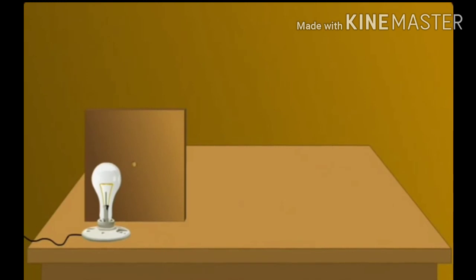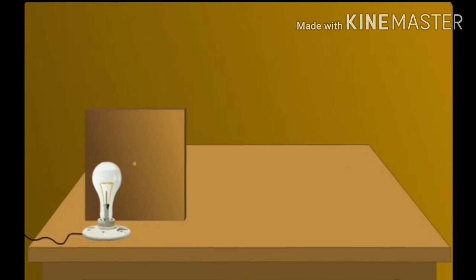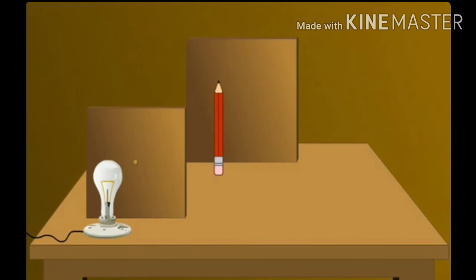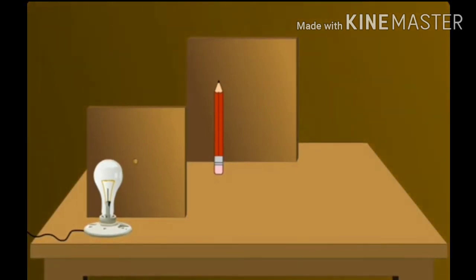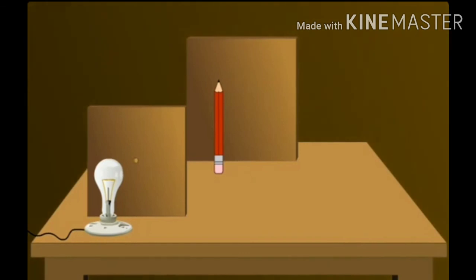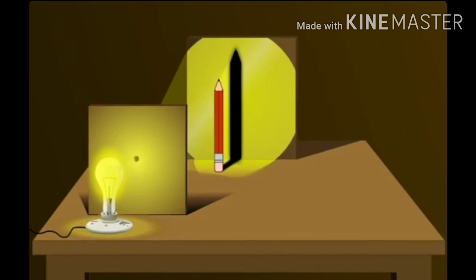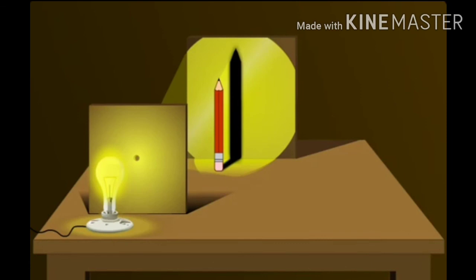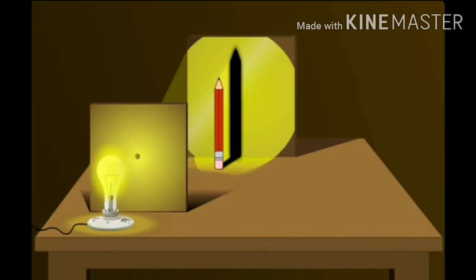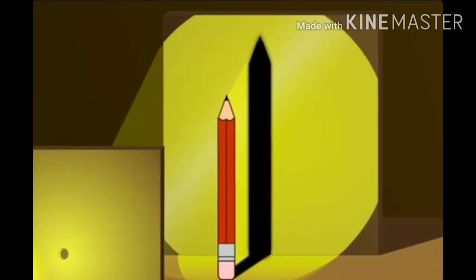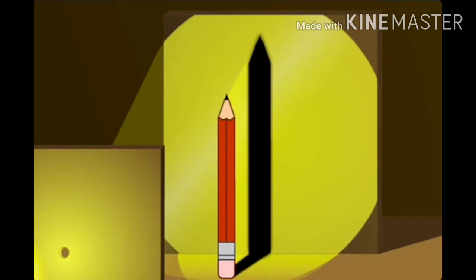Look at this setup. There is a bulb, a cardboard with a small hole, a pencil, and a screen. Why do we have a small hole? Because the bulb is pretty big — you can't call it a point source. So we allow the light to pass through the hole so that it acts as a point source. The pencil does not allow the light rays to pass through it, and as a result a shadow is formed on the screen. The shadow is the region on the screen that does not receive light, while the surrounding region receives light.